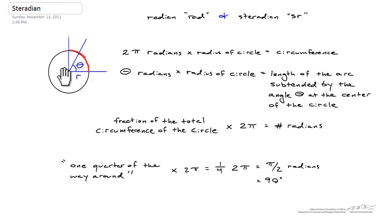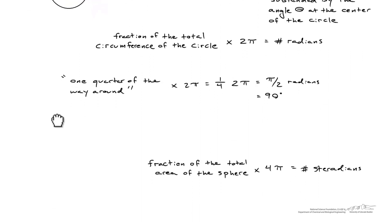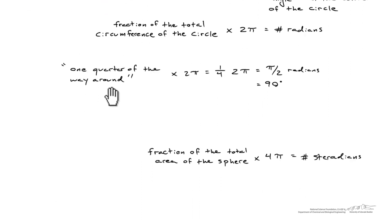The analogy between a radian and a steradian is that we're going from a 2-dimensional concept to a 3-dimensional concept. Instead of looking at the fraction of the total circumference of a circle and multiplying by 2π, we're going to look at the fraction of the total area of a sphere and multiply it by 4π. Just as we got radians in the 2D case, we'll come up with steradians in the 3D case.